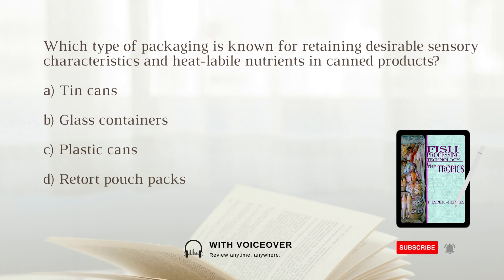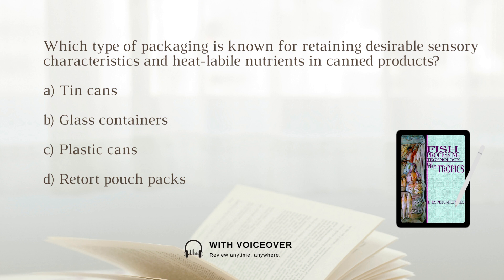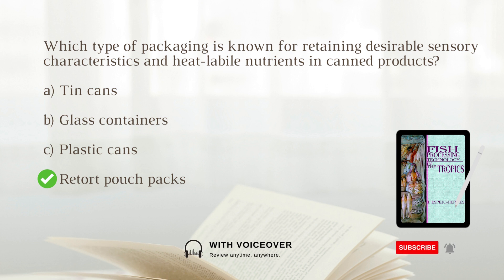Which type of packaging is known for retaining desirable sensory characteristics and heat labile nutrients in canned products? Answer: Retort pouch packs, due to minimized overcooking.